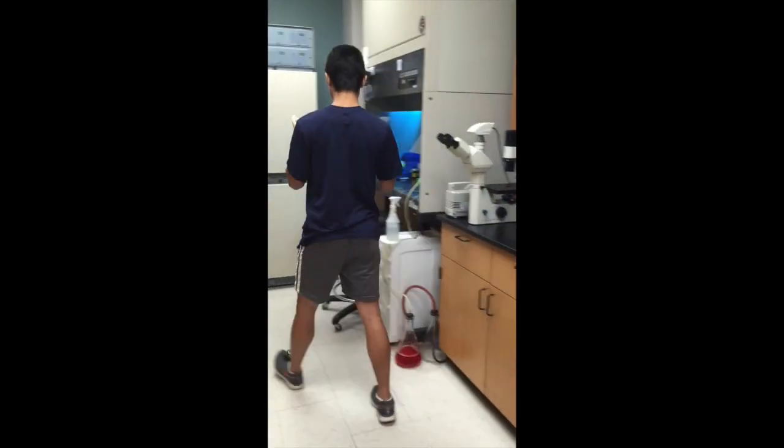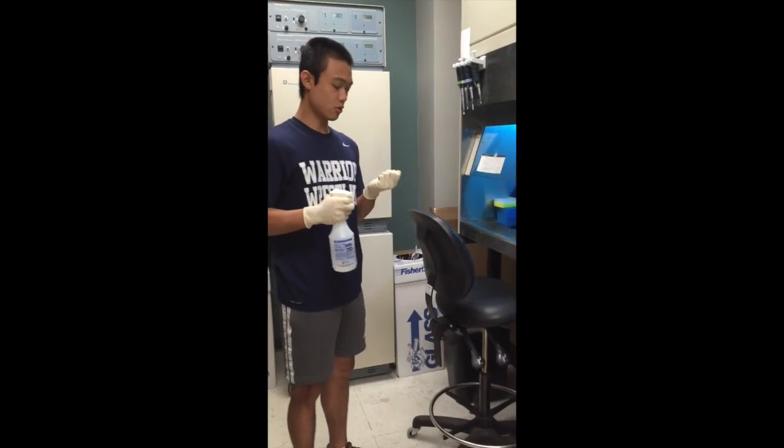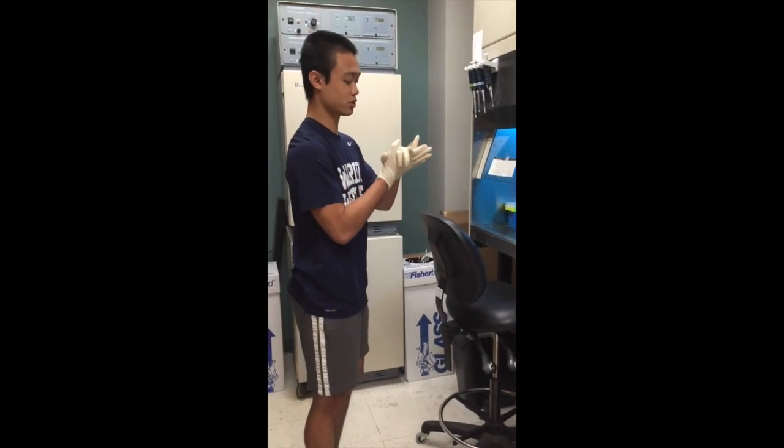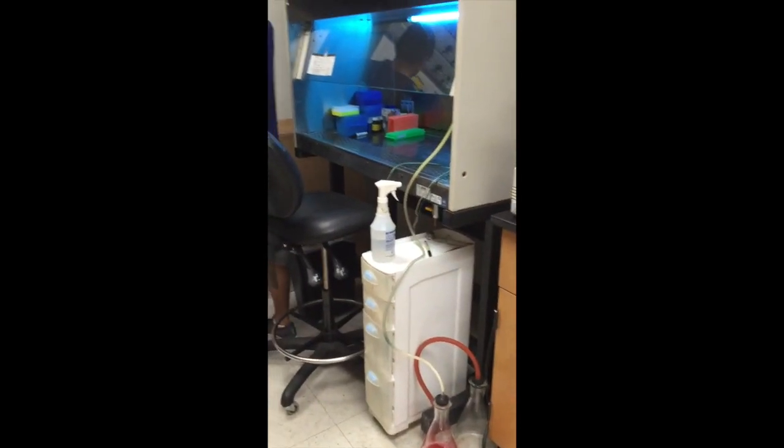So here we have the hood, this is the incubator where we keep all of our cells. So today we're going to be splitting cells. I always want to be wearing gloves, and I always spray, no such thing as over spraying. That's a 70% alcohol solution.